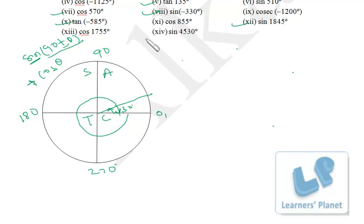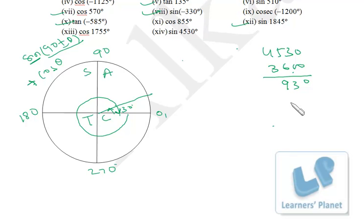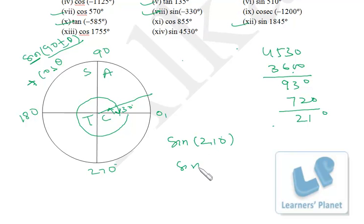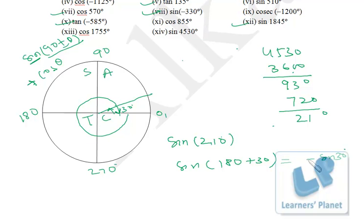Now sine 4530°. Deduct 3600 (10 circles): 4530 − 3600 = 930. Still deduct two more circles (720): 930 − 720 = 210°. So sine 4530° = sine 210° = sine(180 + 30). Adding to 180, so sine stays sine. Sine(180 + 30) is in the third quadrant where sine is negative. So it's minus sine 30 = minus 1/2.